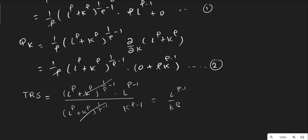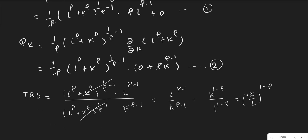We have ρ minus one and ρ minus one in the exponents. If we shift the capital to the numerator, its power changes: it becomes plus one minus ρ. Similarly, this becomes L to the power plus one minus ρ. Overall, this becomes (K/L) to the whole power of one minus ρ. So this is the technical rate of substitution.